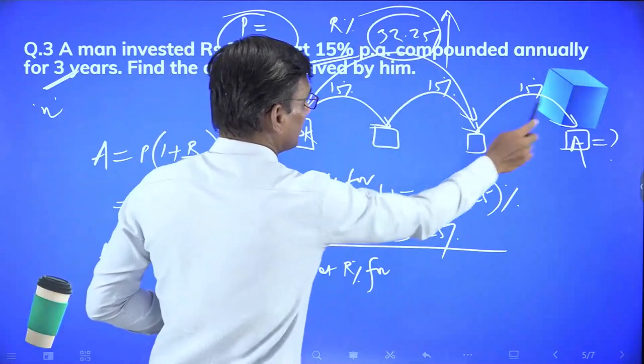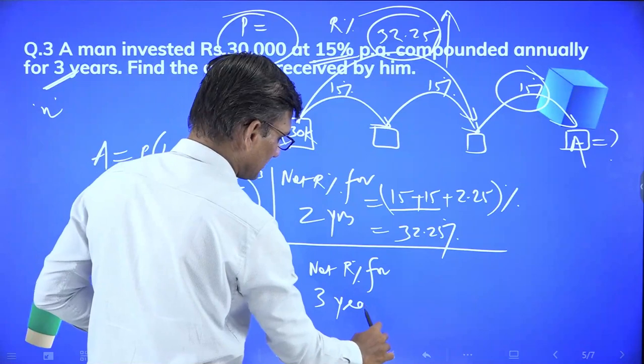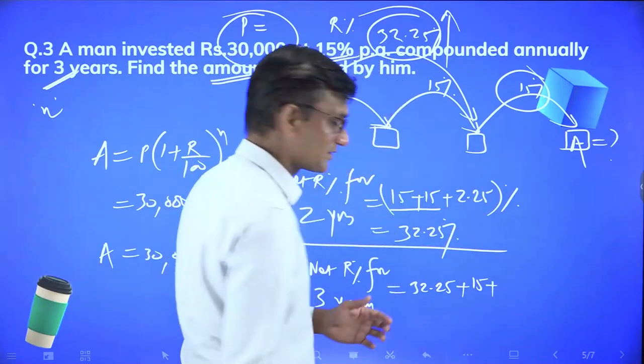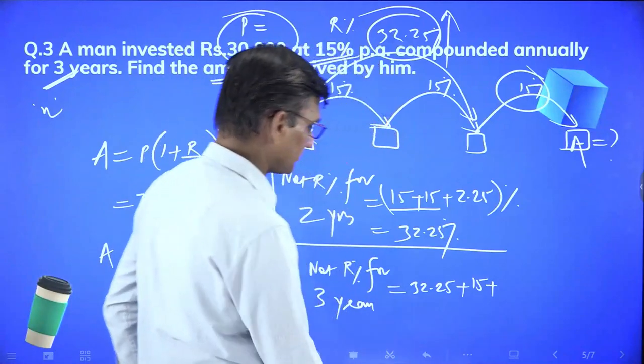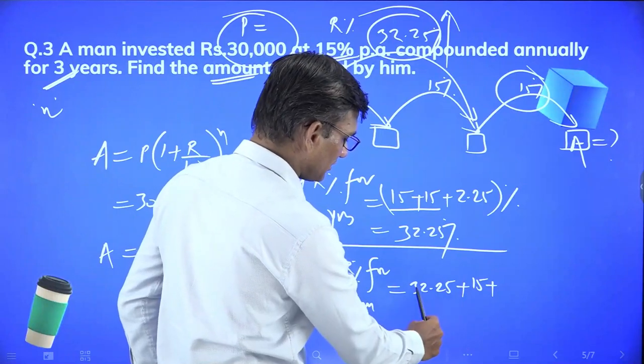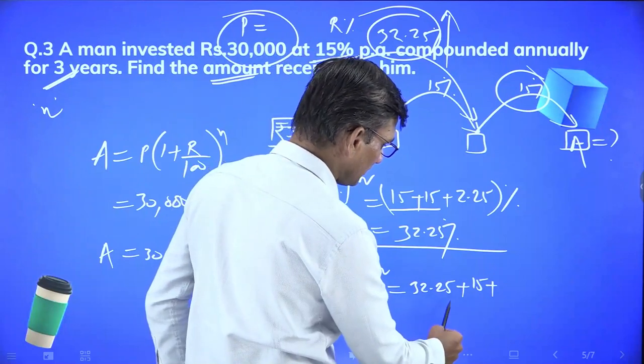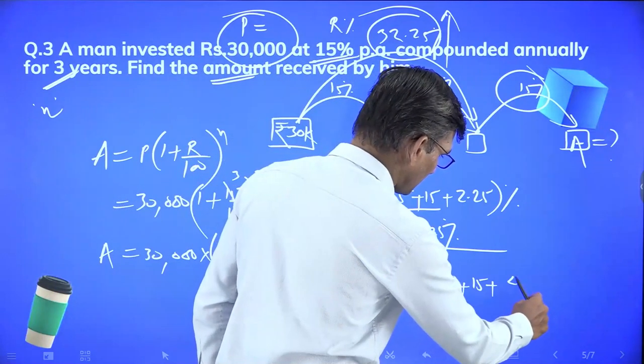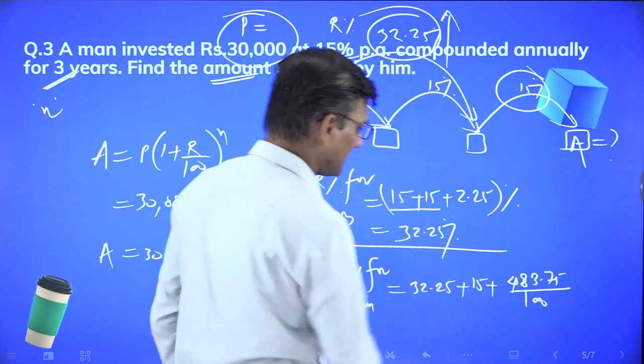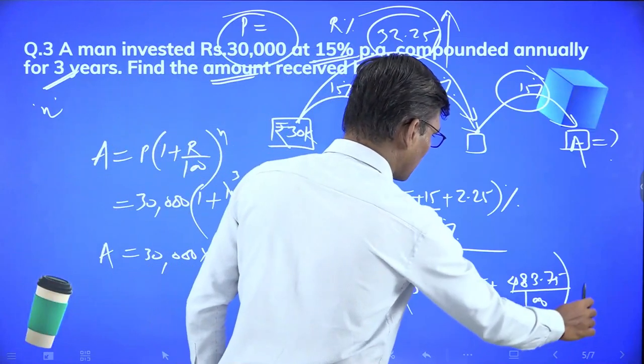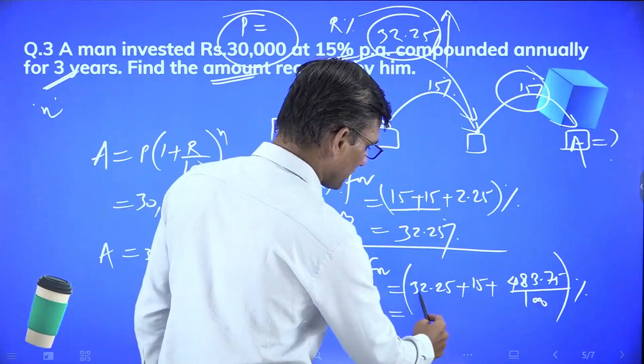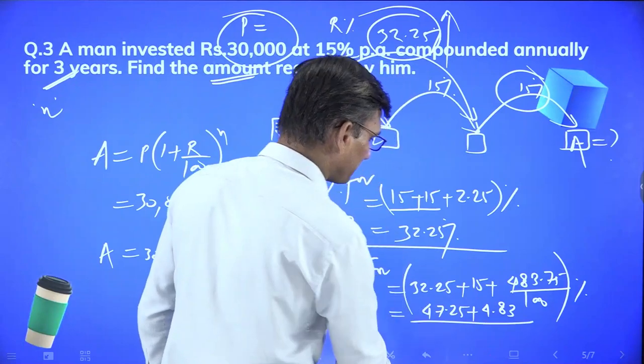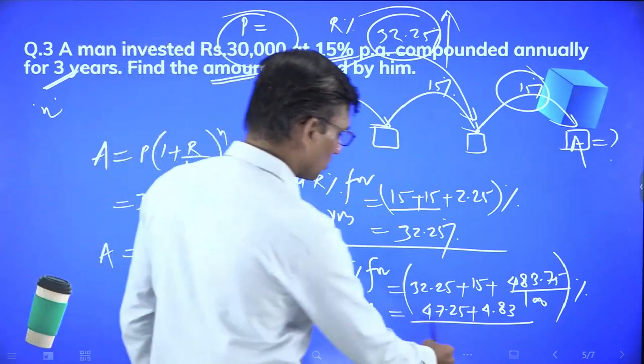Now for the third year, this increased value will get 15% more interest. So we re-use the formula. Net rate for 3 years: a becomes 32.25, b is the third year's 15. So 32.25 plus 15 plus 32.25 times 15 divided by 100. 15 times 32 is about 480, plus 3.75 gives about 4.83.